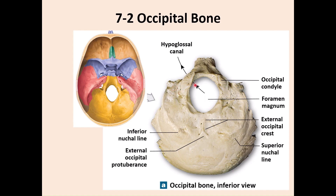There are also a couple of small openings here — one here and one here, though you cannot see them from this view. These are the hypoglossal canals, and cranial nerve 12 passes through them. You also have these structures called occipital condyles, which articulate with the first cervical vertebra.